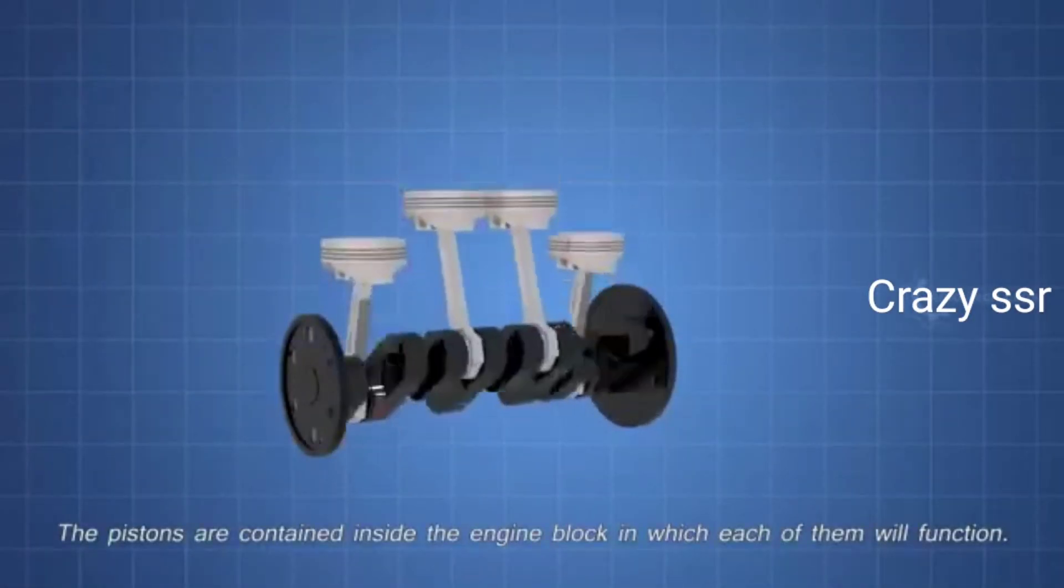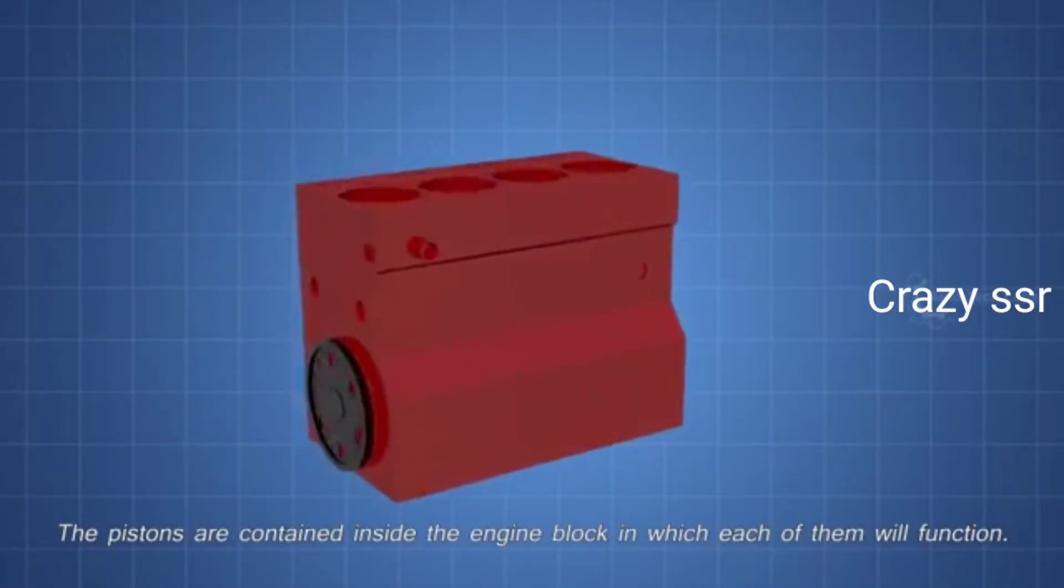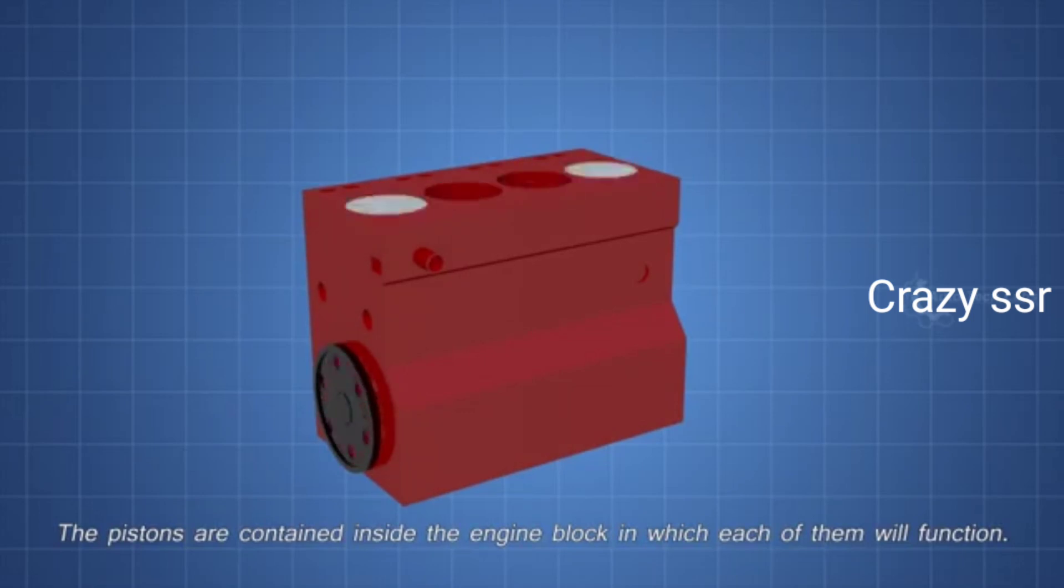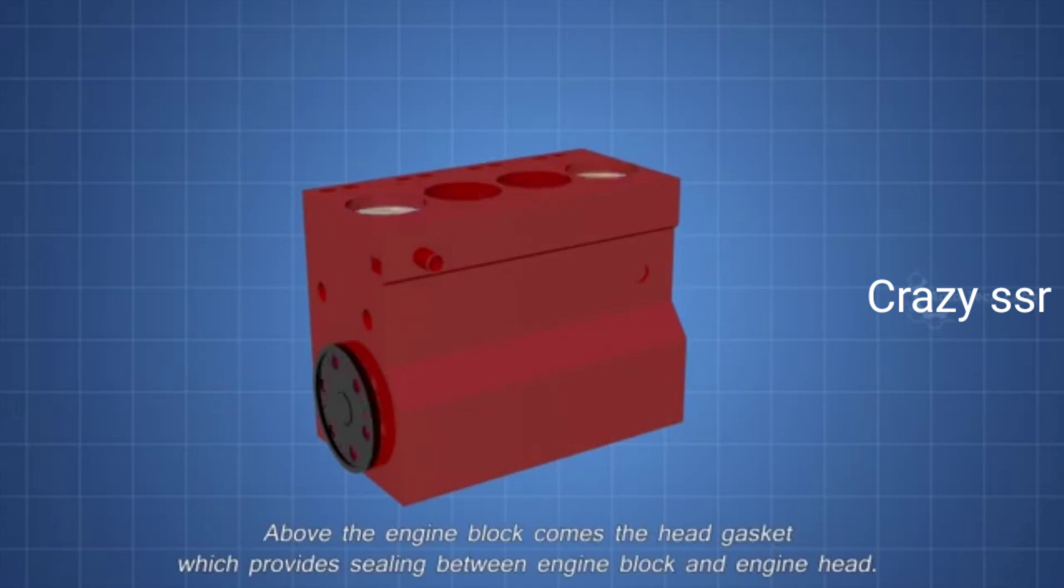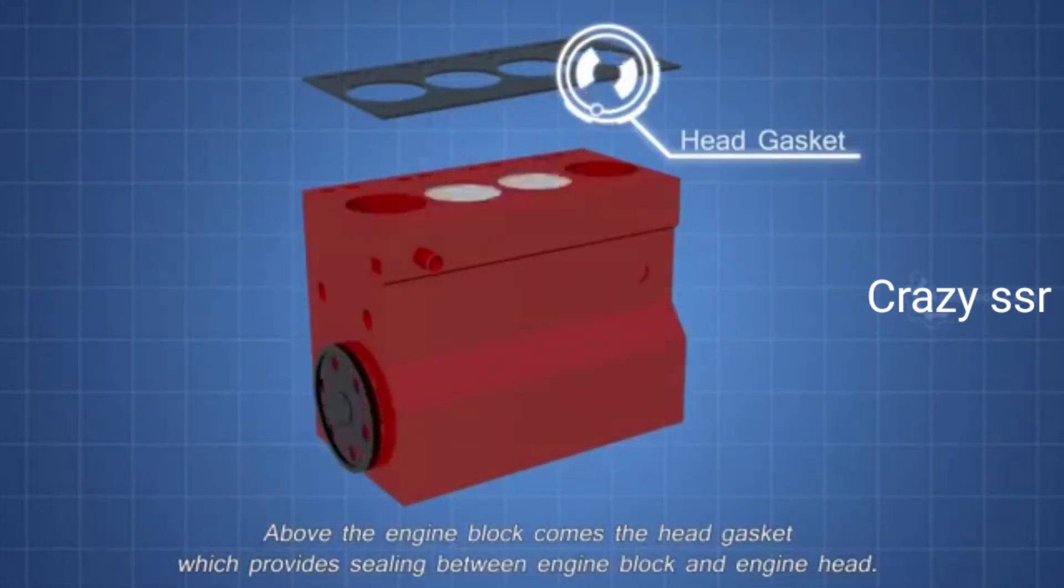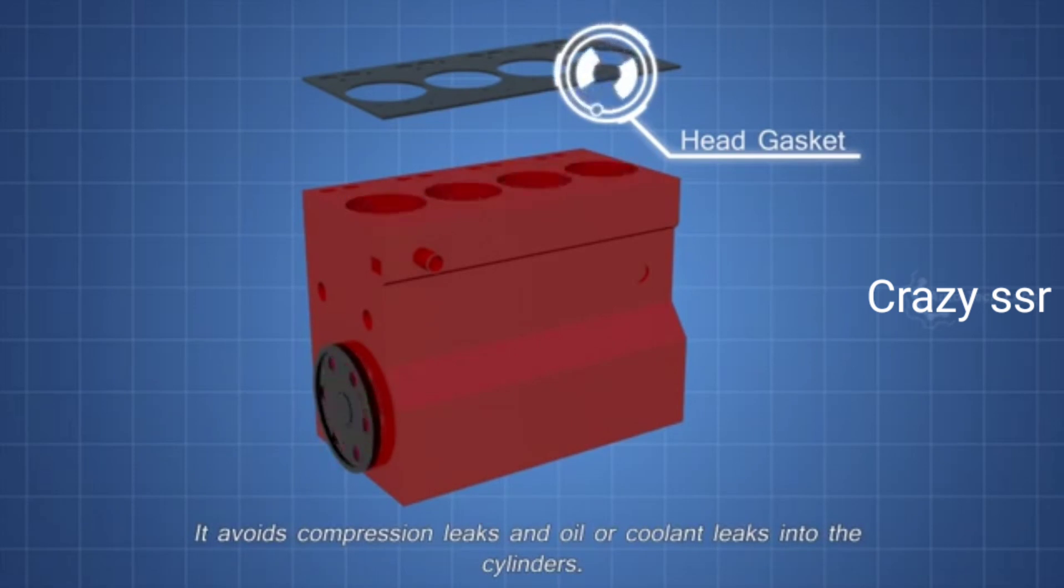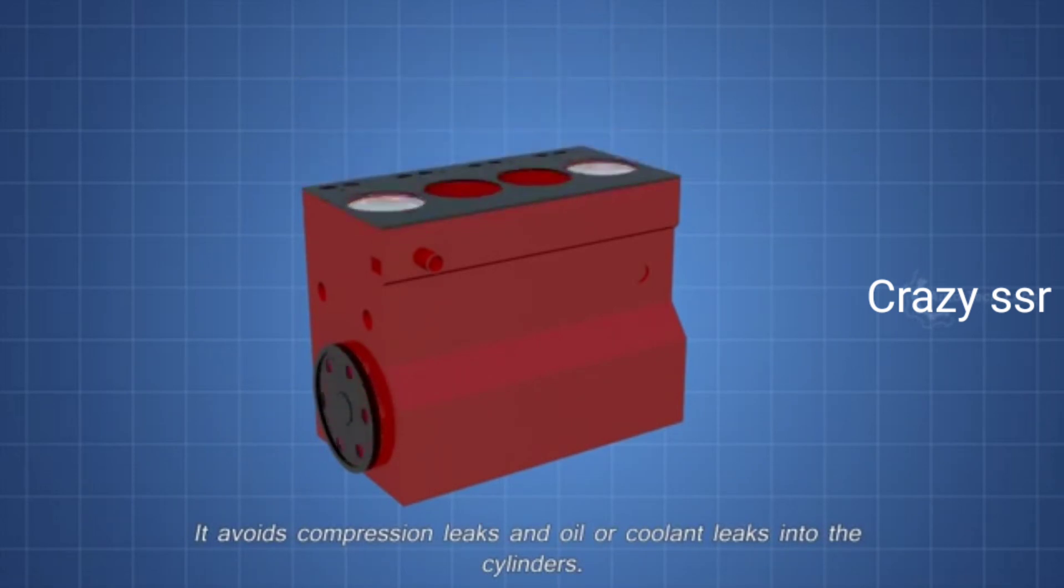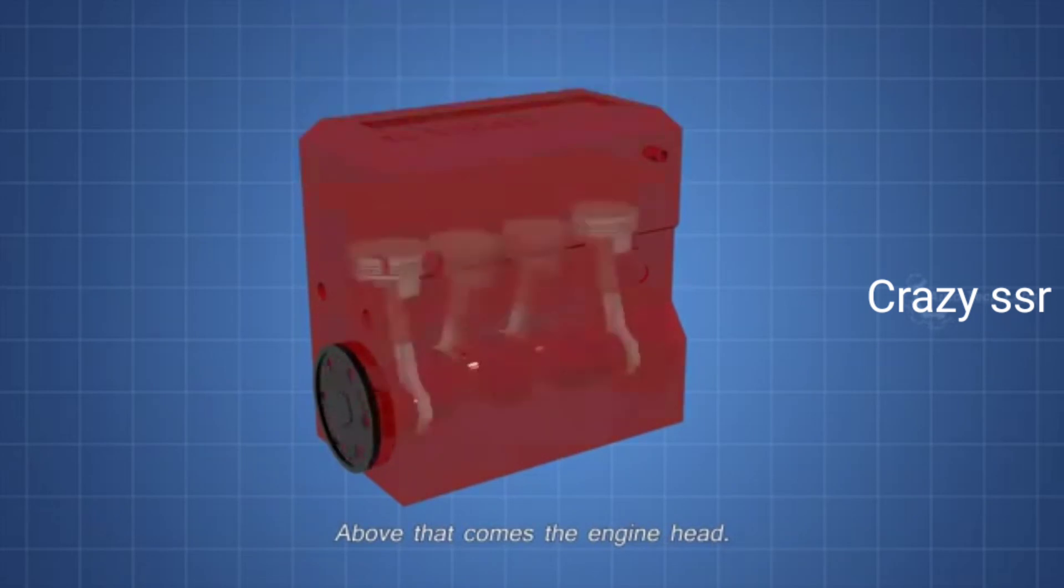The pistons are contained inside the engine block, in which each of them will function. Above the engine block comes the head gasket which provides sealing between engine block and engine head. It avoids compression leaks, and oil or coolant leaks into the cylinders. Above that comes the engine head.